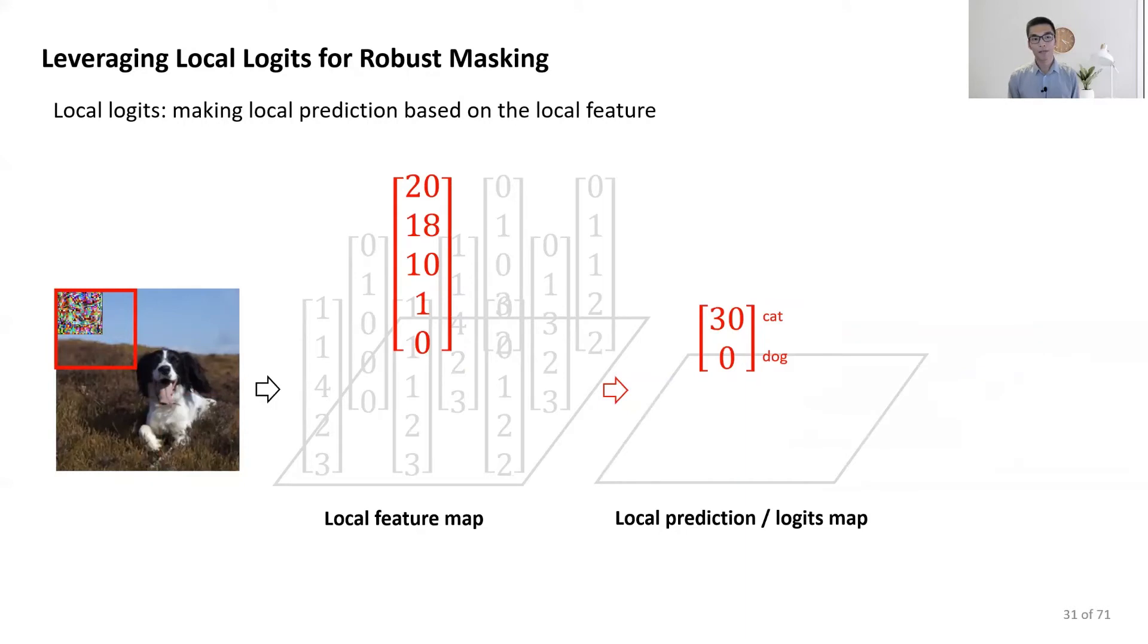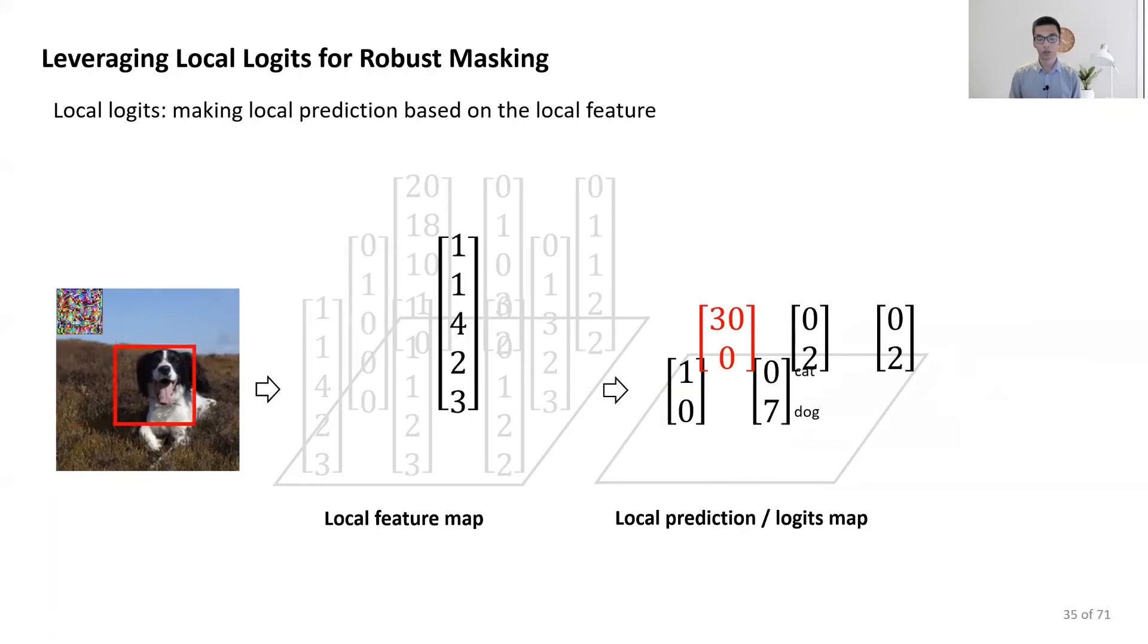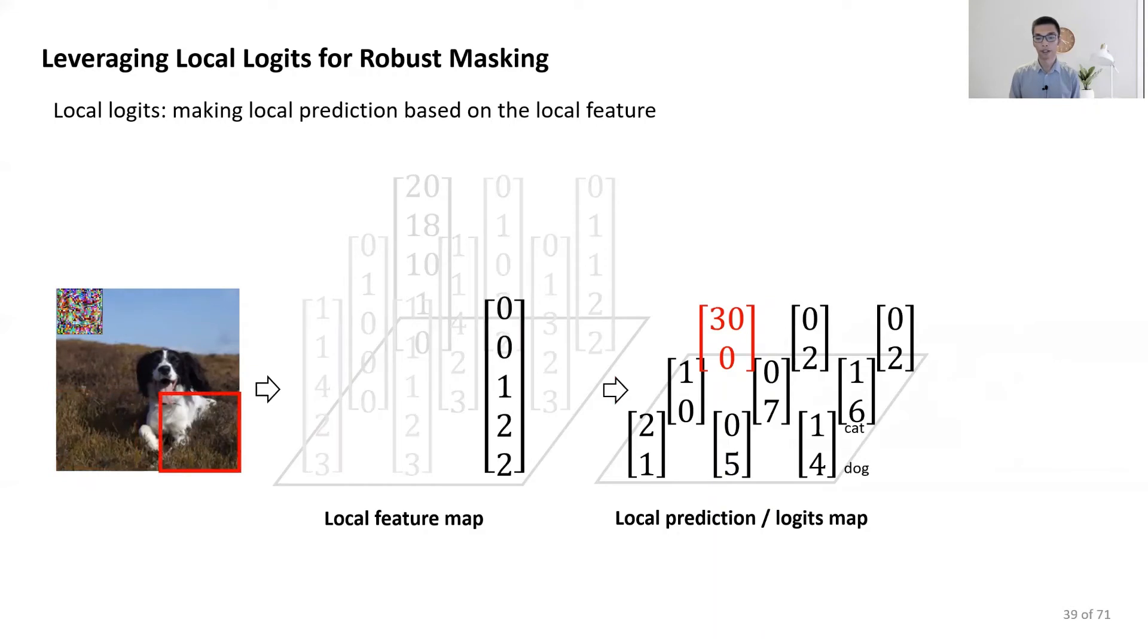Our robust masking leverages a concept named local logits. Just as we do global prediction based on the global feature, we can do local prediction based on each local feature. Here, by looking into different local features, we can get different local prediction logits. And finally, the local logits map. I want to note that aggregating this local logits map gives us the same global prediction logits in conventional networks.